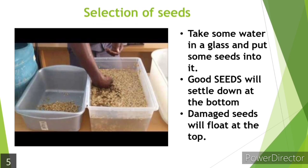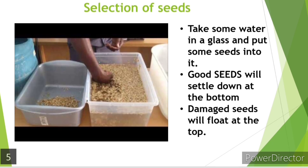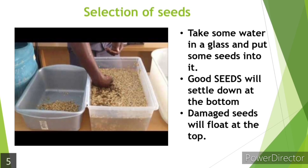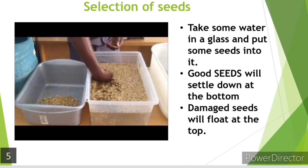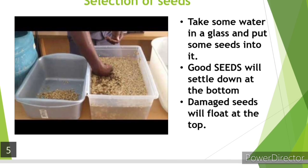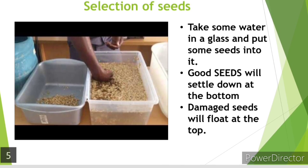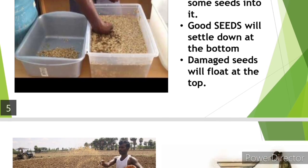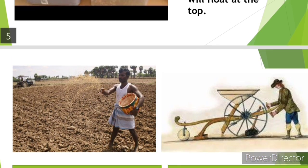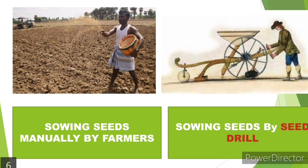To select seeds, we take some water in a glass and put some seeds inside it. Good seeds will settle down at the bottom, whereas the damaged ones will float on the top surface. This way we can segregate them easily. After that, we can sow those good seeds manually, as you can see on the left-hand side.